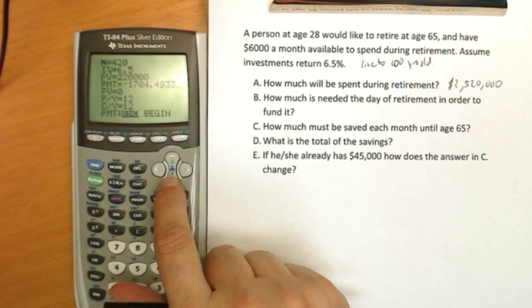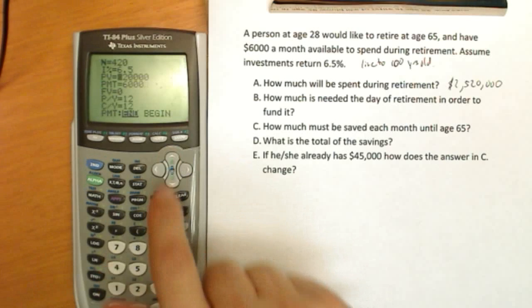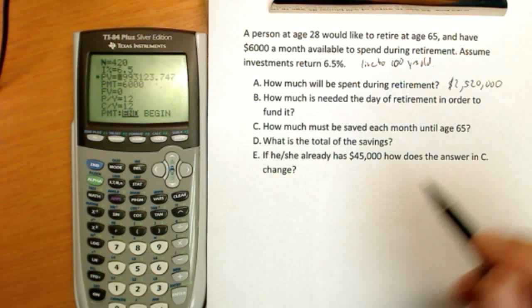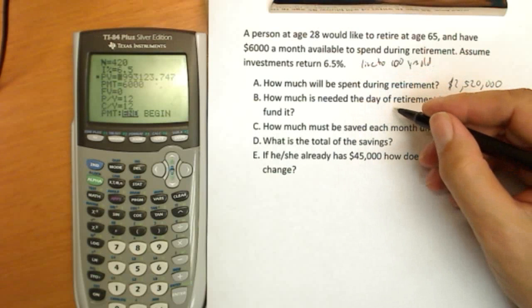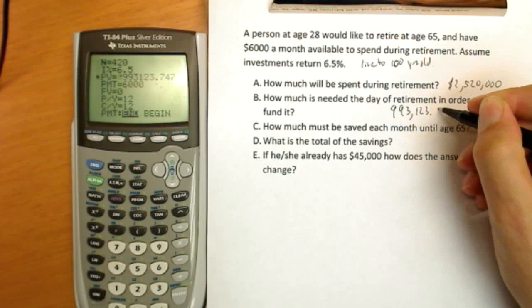They're earning 6.5% on their investments. We're going to find a present value to afford a $6,000 a month payment to ourselves. So how much would you need to have in your account? And now we find they need to have $993,000. So that's already a lot better.